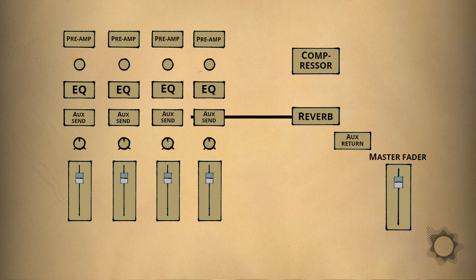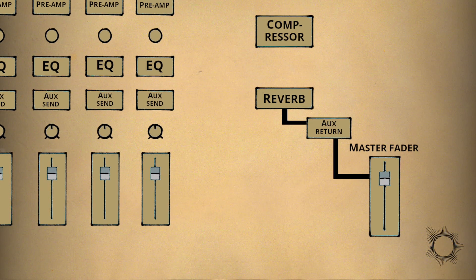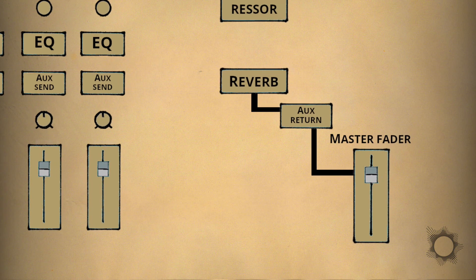From the effects processor the signal comes back to the mixer via an auxiliary return control which is the sub-master for the sends before travelling on for blending at the master bus.